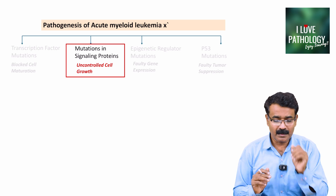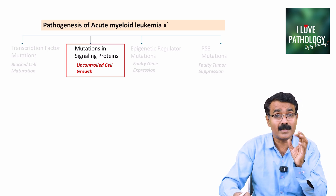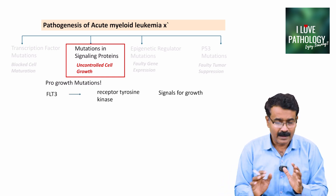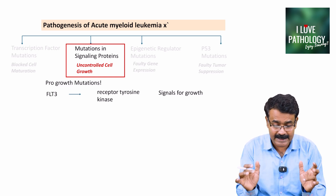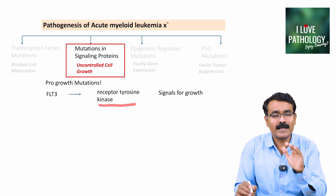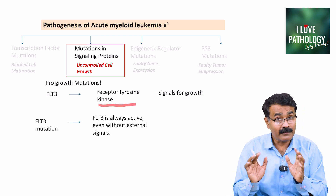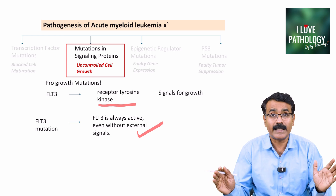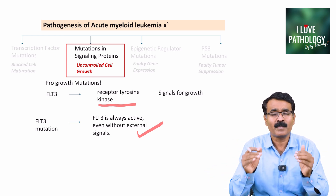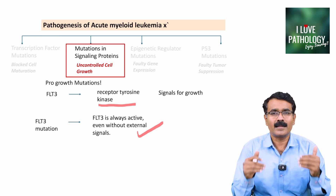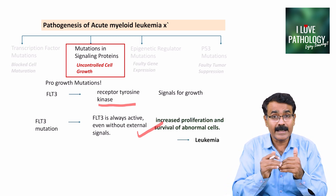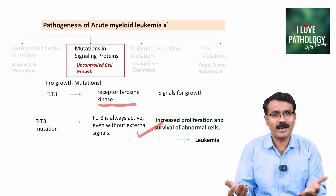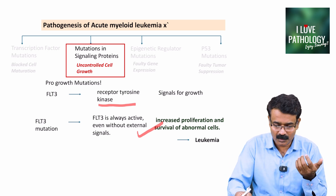The second important kind of mutations are mutations in signaling proteins, resulting in uncontrolled cell growth — also called pro-growth mutations. For example, FLT3 is a receptor tyrosine kinase that normally helps in signaling of growth. If there is a mutation involving the gene coding FLT3, it becomes constitutively active even without any external signal, leading to increased proliferation and survival of abnormal cells — leukemia.